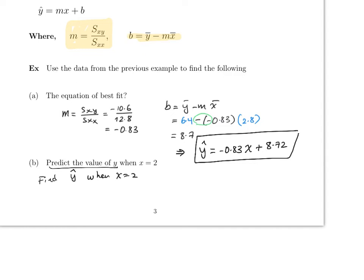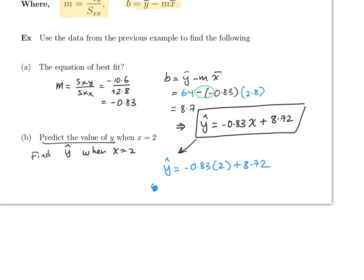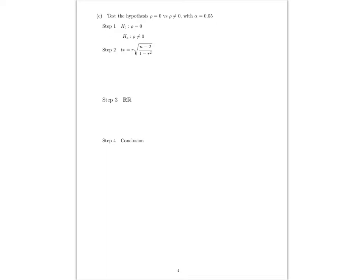To predict y: find ŷ when x = 2. Plug in: ŷ = −0.83(2) + 8.72 ≈ 7. Since x is number of cups of coffee and y is hours of sleep, this means if someone drinks two cups of coffee, you expect them to sleep approximately seven hours.